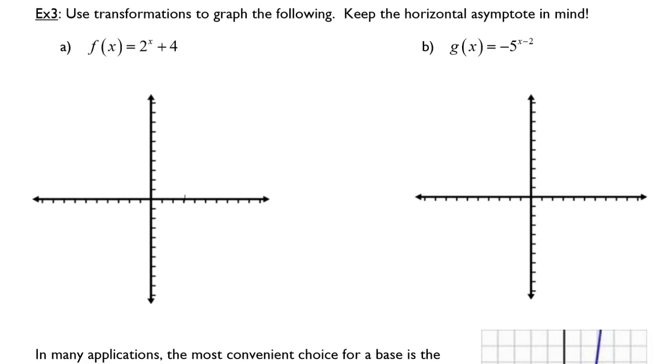We're now going to use transformations to graph the following. We know that there is a horizontal asymptote for a standard generic function without any vertical shifting at 0. Since we know that this is 2 to the x plus 4, we know there will be a horizontal asymptote at 4. So now let's just redo our graph of 2 to the x pretending that y equals 4 is the x-axis.